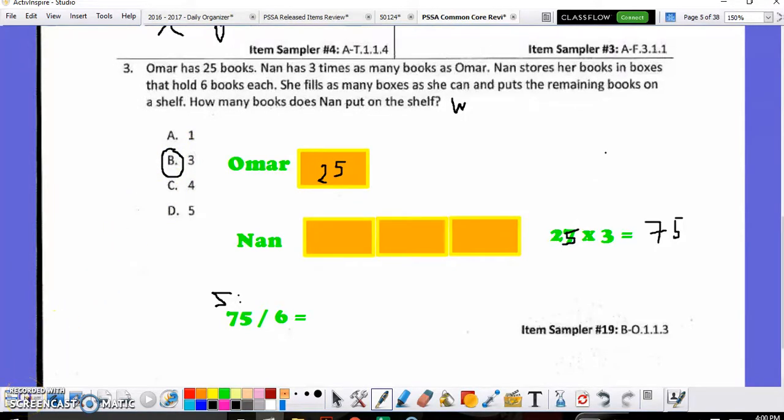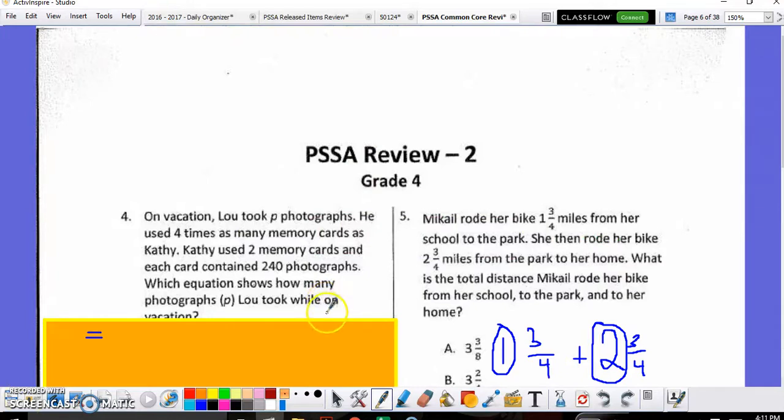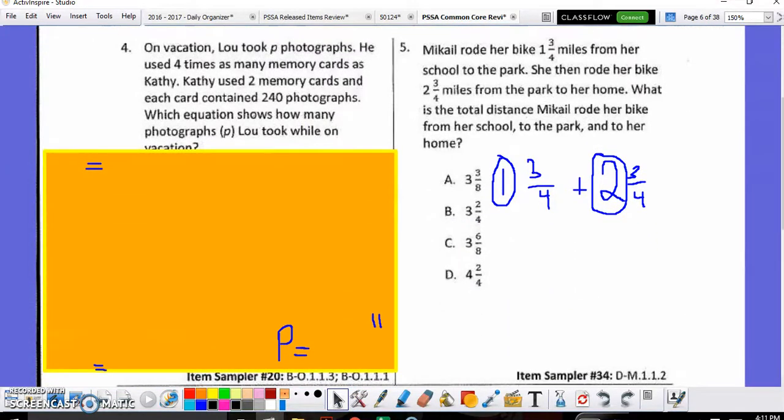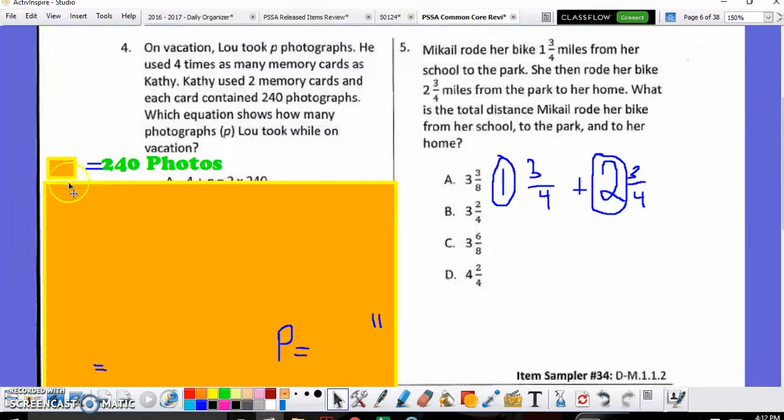Let's take a look at four and five. Question four is another example of needing a KWS chart. Because it's a word problem. And this one's a little bit more difficult. What I would suggest here is actually solving the problem and then going back and testing each of the choices to see which works. So, on a vacation, Lou took a variable P photographs. So, they're replacing the number with the letter P. That's a variable. He used four times as many memory cards as Kathy. Kathy used two memory cards and each card contained 240 photographs. Which equation shows how many photographs, which again is represented by the letter P for that variable, Lou took while on vacation.